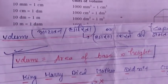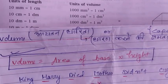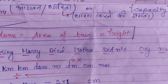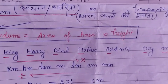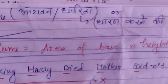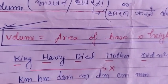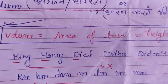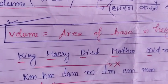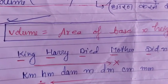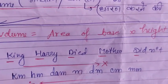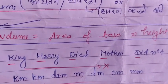Volume is none other than the area of base multiplied by its height. Whenever we see any 3D object — I have already taught you in class — 3D objects are those which have three dimensions.